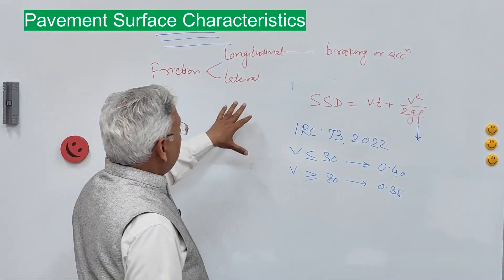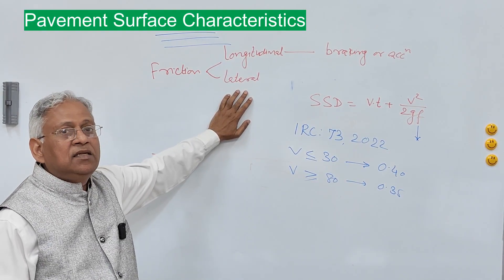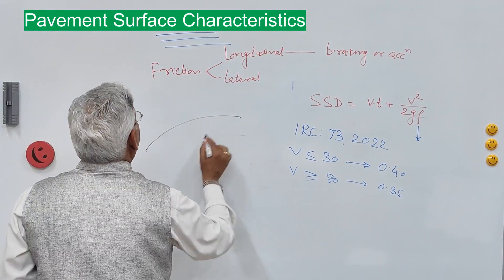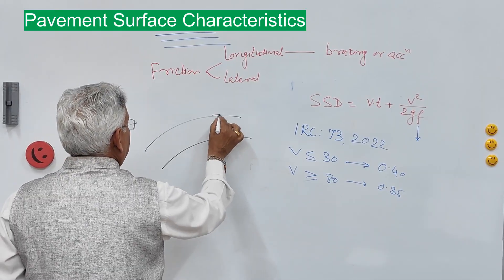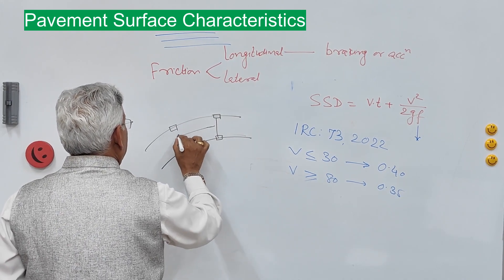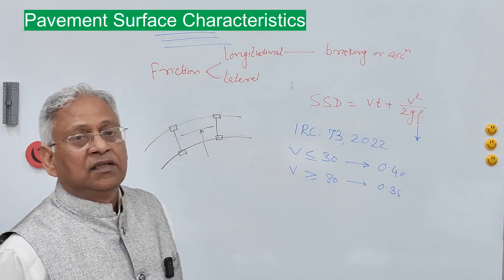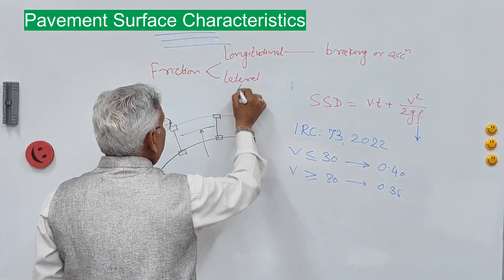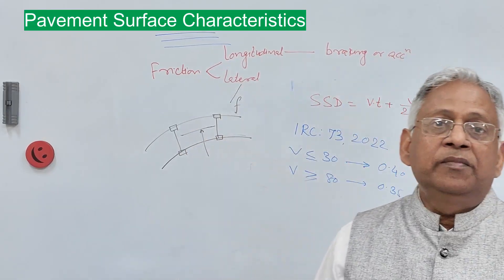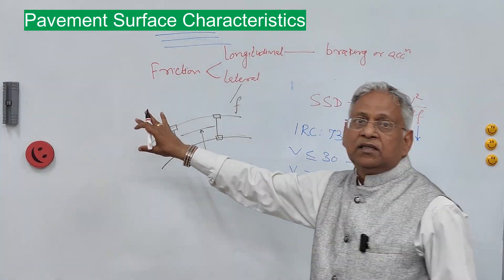The second part is lateral friction, which comes into picture when there is a lateral force on the vehicle. For example, when you design a horizontal curve and a vehicle negotiates that curve, centrifugal force acts on the vehicle as a lateral force directed outside the curve. That is where lateral friction comes into picture. If sufficient friction is not provided, there will again be skidding and the wheels will go out of the track.